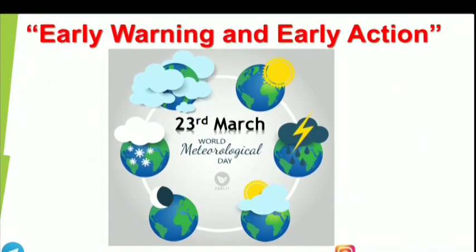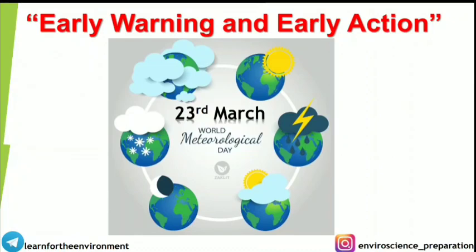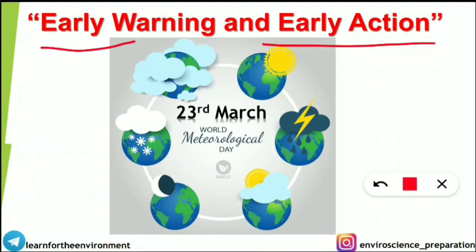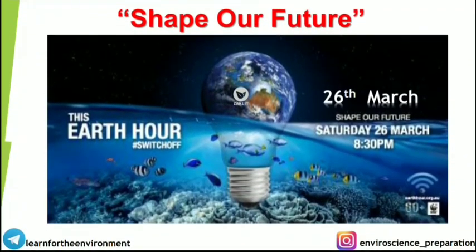Following World Water Day is World Meteorological Day on 23rd March every year. This year's theme is 'Early Warning and Early Action,' suggesting that when there is early warning of cyclone, flood, or drought, early action should be taken to avoid those hazards and natural calamities.